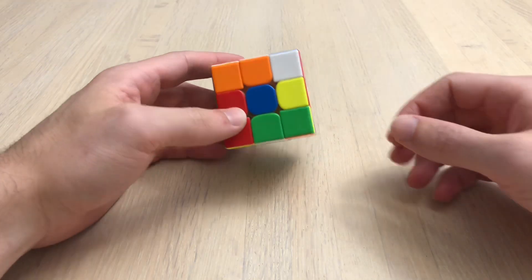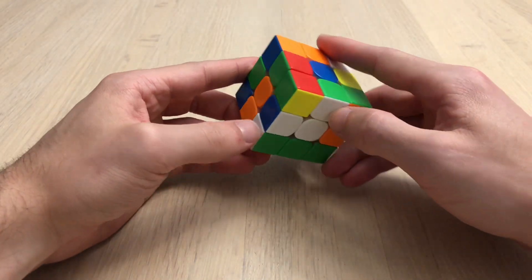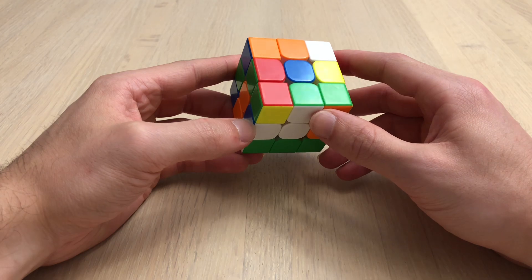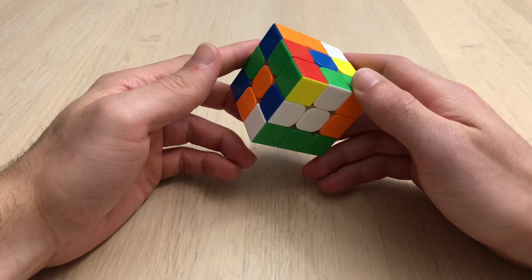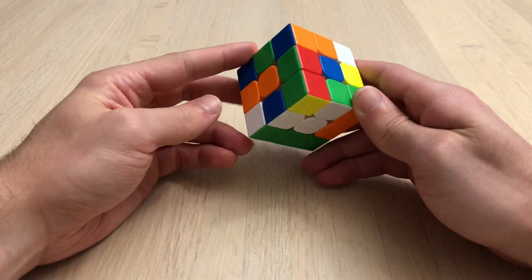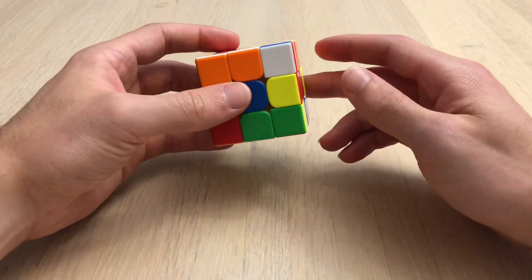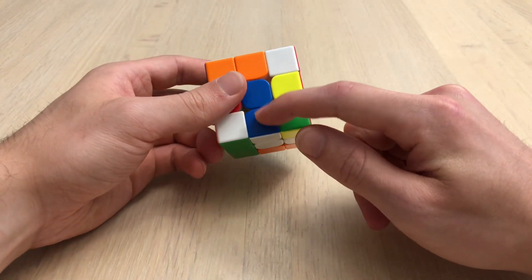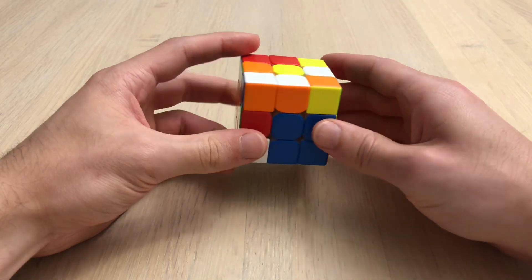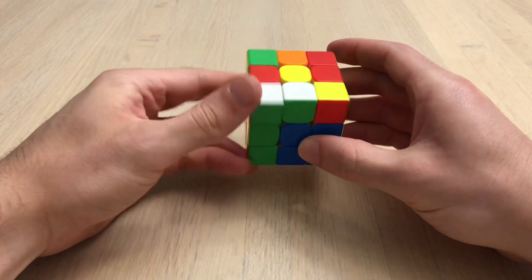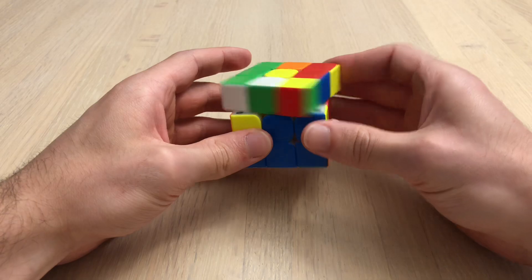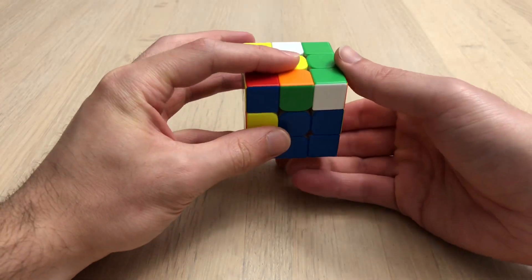Second scramble, see these two cross edges not in the right place. I think what I'll do is line this blue up, insert red, insert orange, and then lastly green in the back.